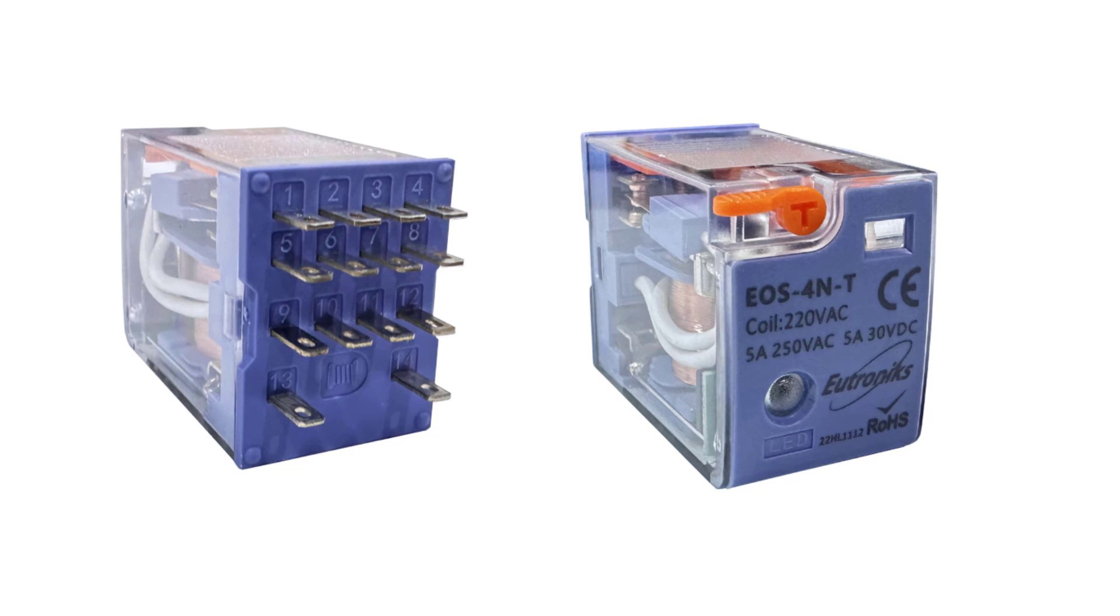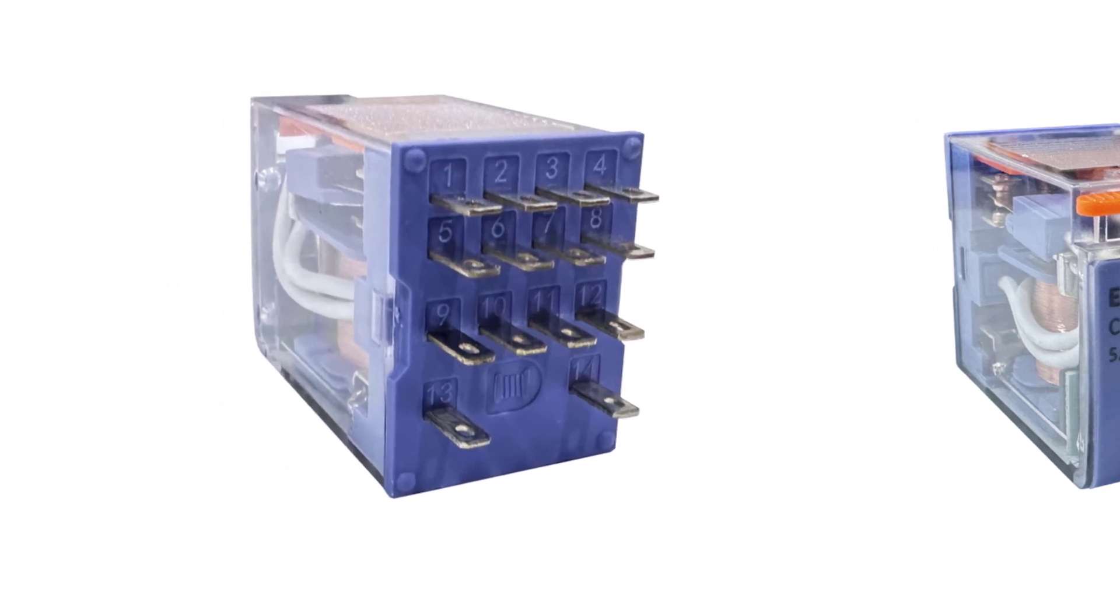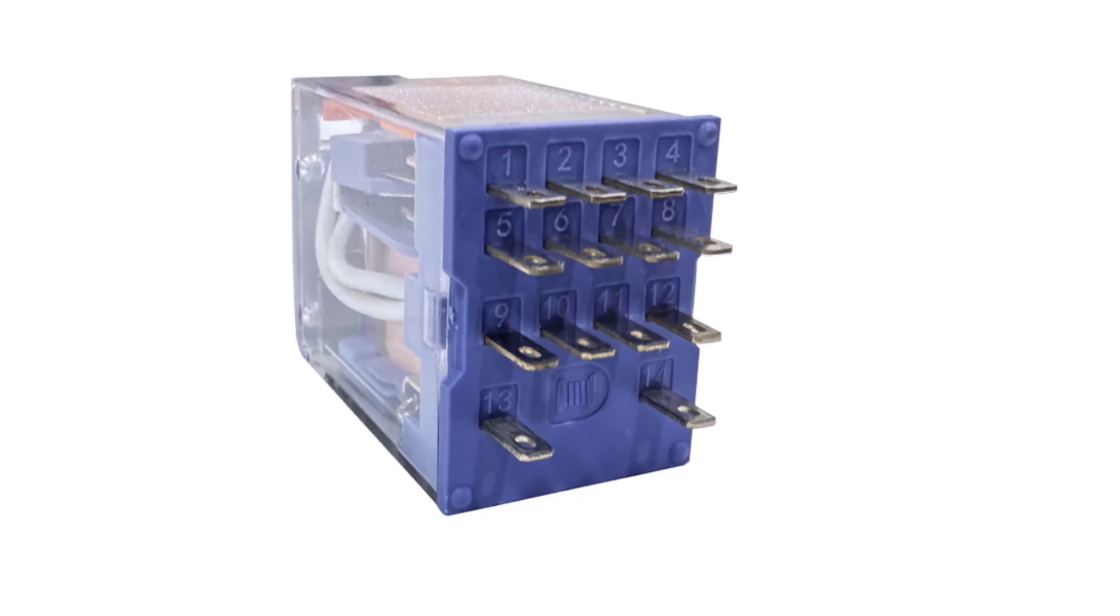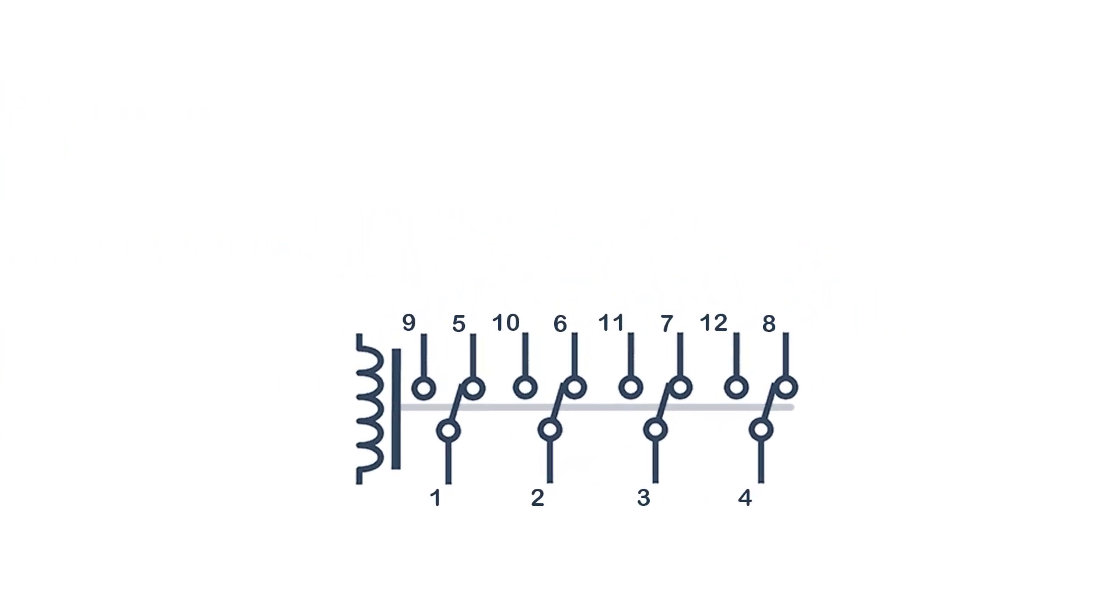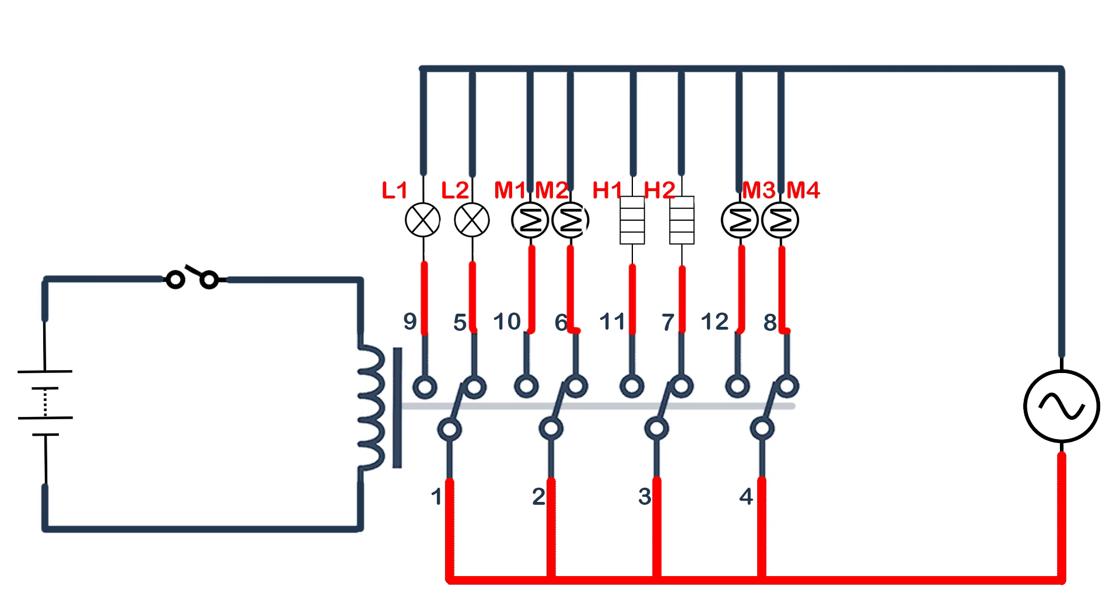The relay contact could be more than one. For example, in this relay we could have four different contacts that closed and opened together. We can use it in different purposes. As you can see in this example, we can control operating lamp number one or two, motor number one or two, heater number one or two, lamp number three or four.